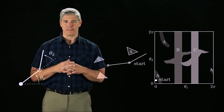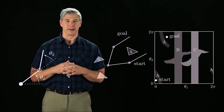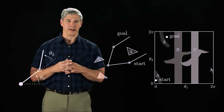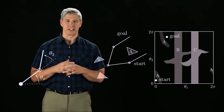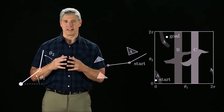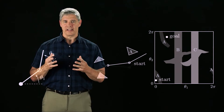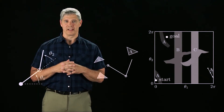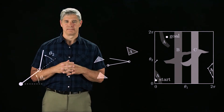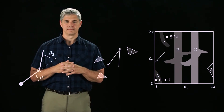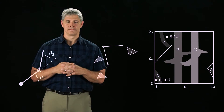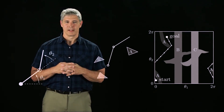Now we'd like to find a path between this start configuration and this goal configuration. Both configurations are in the same connected component, so we know a solution exists. Remembering that the left and right edges of the square are connected, let's animate a solution path in both the real space and the C-space. Planning collision-free paths for other robots is conceptually the same as for the 2R robot. We transform obstacles to C-space obstacles, then we plan a path for a point in the free portion of the C-space.